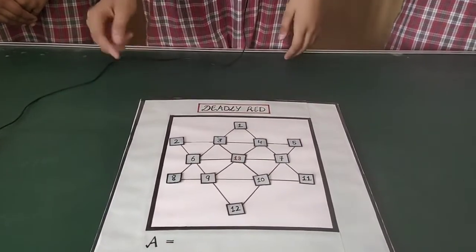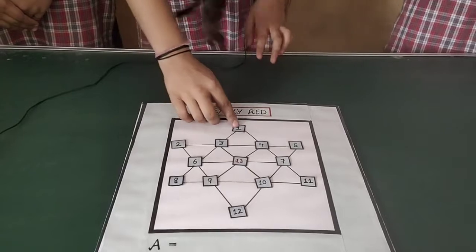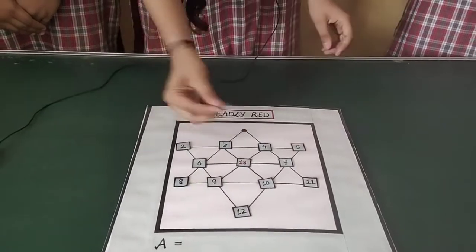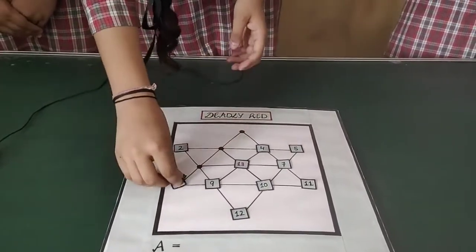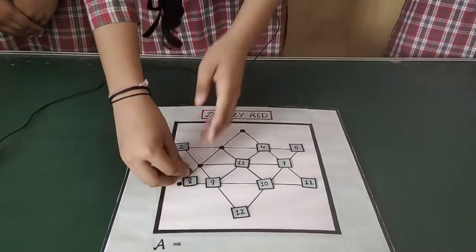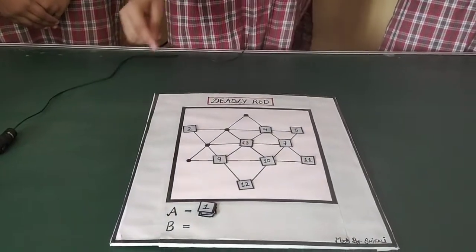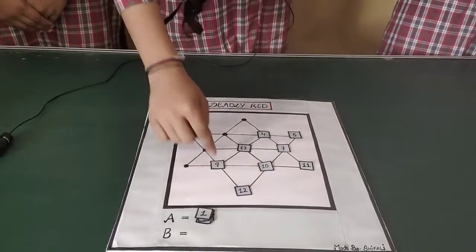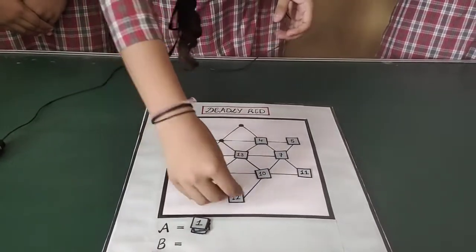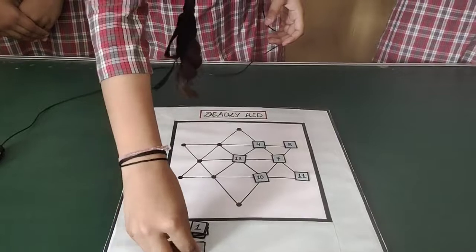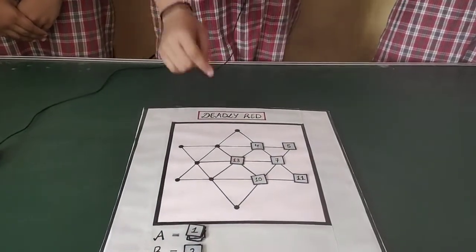First turn is for A team. They collect only in a straight line: 1, 3, 6, and 8. Now the turn is for B team, and B team collects 2, 9, and 12. We do not touch number 13 because it is the deadly red and it is placed in the middle.